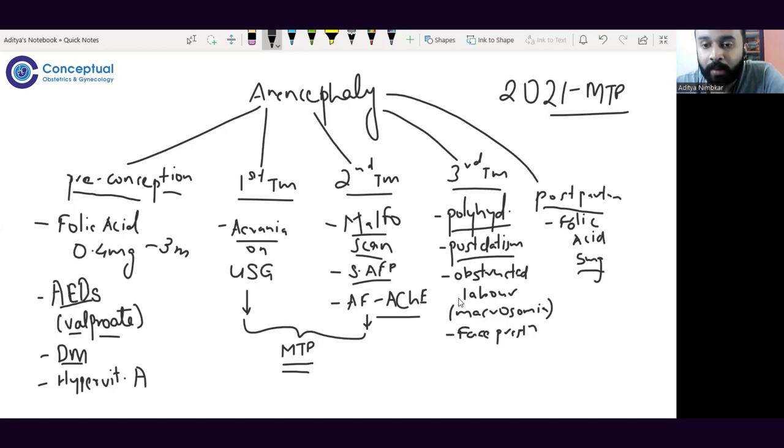For that obstructed labor to progress, there is face presentation. Why face presentation? Because obviously the head which was going to be this big in a normal baby doesn't have this part of brain, so when this part is not present, it takes up the shortest diameter, and that shortest diameter ends up being a face presentation. These babies when they go into labor are often delivered with face presentation.